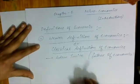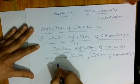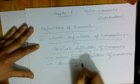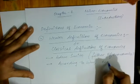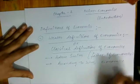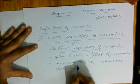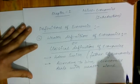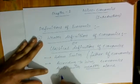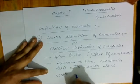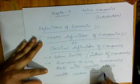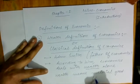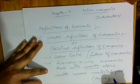We call it the Wealth Definition because Adam Smith said that Economics deals with Wealth alone — Economics is only related to Wealth. According to Adam Smith, Wealth means Material Goods. Material Goods are those goods that are tangible in nature — tangible goods.